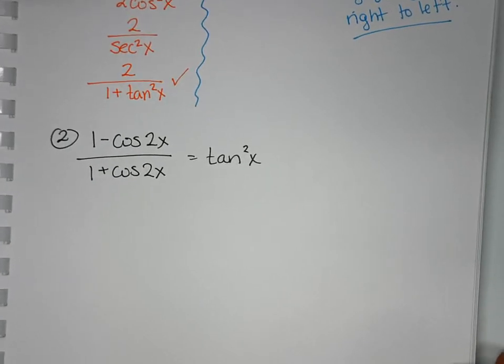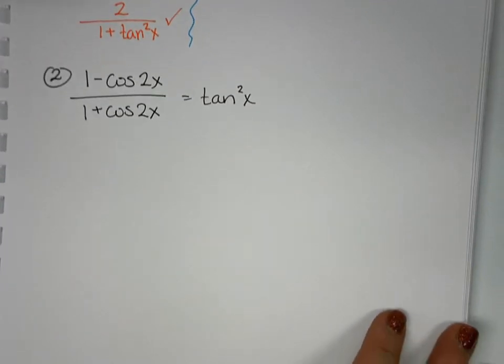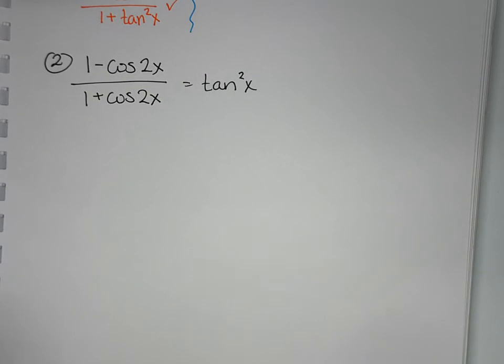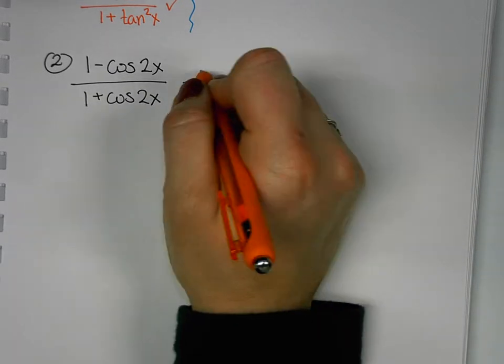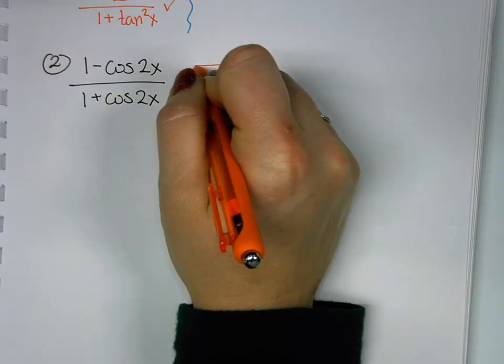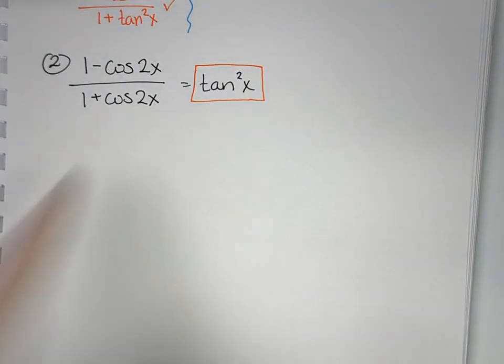Again, we're looking at a cosine double angle, and we have to again try to determine which of the three formulas we're going to use. First thing: pick a side you want to work with and what side you're going to try to match up. I'm going to try to match up to tan²x and I'm going to work with the left.